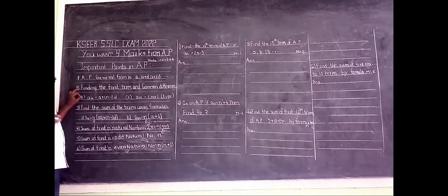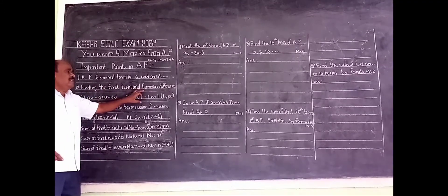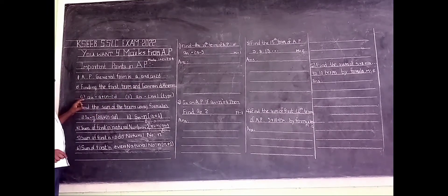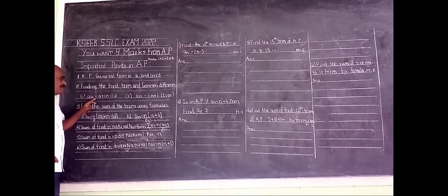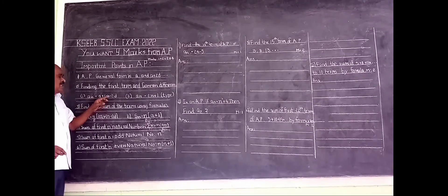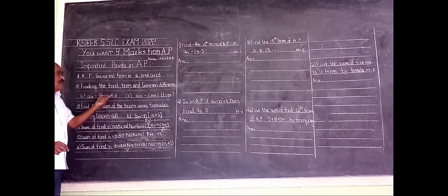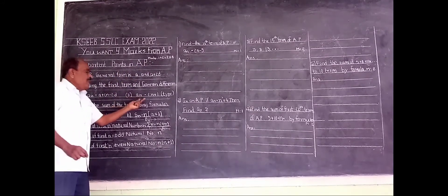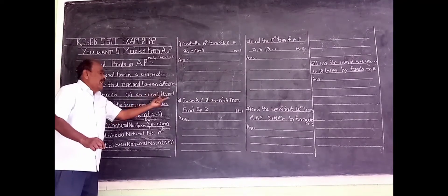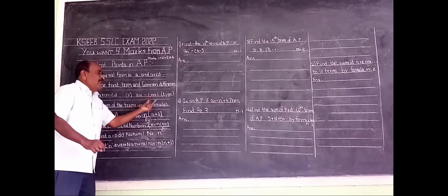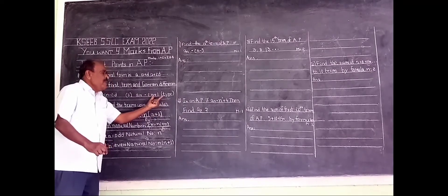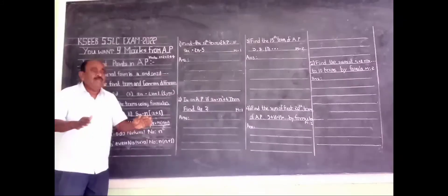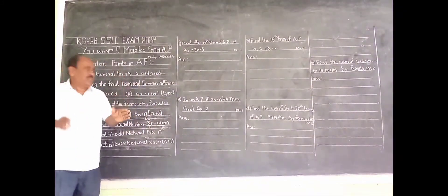Second part is finding the first term and common difference from the formula. The term formula is AN equals A plus (N minus 1) into D. From this formula, they will select the 1-mark question. And second, AN equals 2N plus 1 type or 2N minus 1 type — this type of formula they will give, and 1-mark question will come in the examination, either as multiple choice or as a 1-mark question.